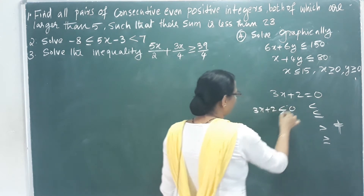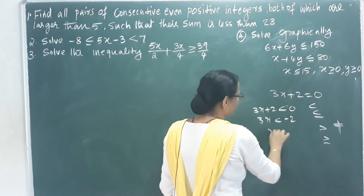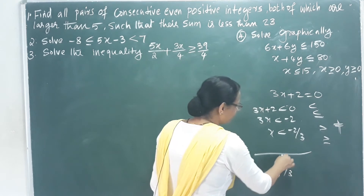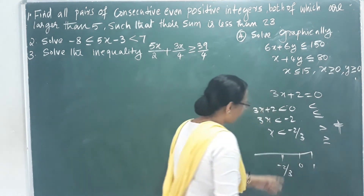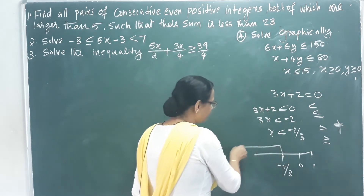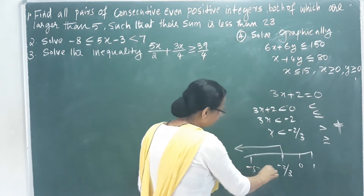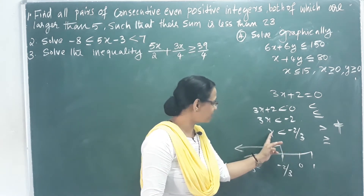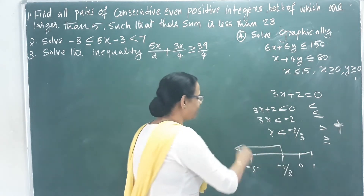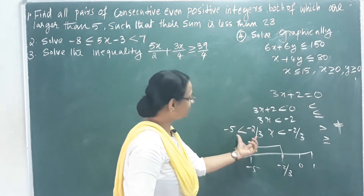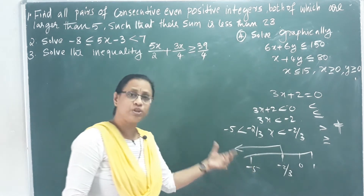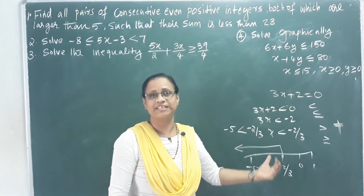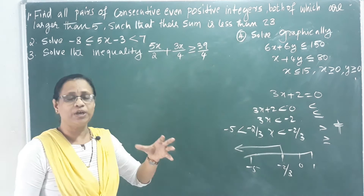For example: 3x plus 2 less than 0, then 3x less than minus 2, so x less than minus 2 by 3. On the number line, we place minus 2 by 3 between 0 and negative values. Substituting negative 5 for x makes the statement true, so negative 5 is in the solution set.